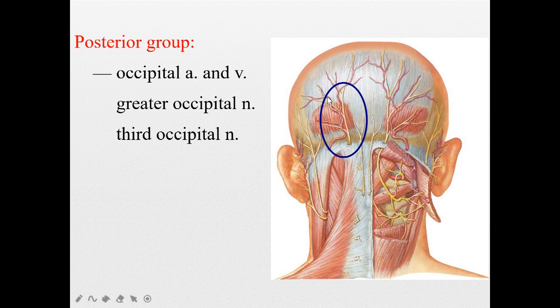The posterior group vessels are the occipital artery and vein. The nerve is the greater occipital nerve.